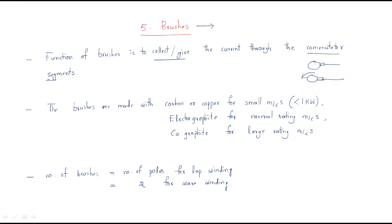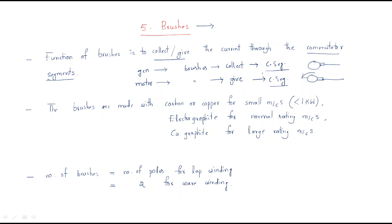The function of brushes is to collect or give current through the commutator segments. In a generator, the brushes collect the current; in a motor, which is the reverse operation, the brushes give the current. The commutator is a mechanically controlled rotating rectifier used to convert AC to DC or DC to AC.